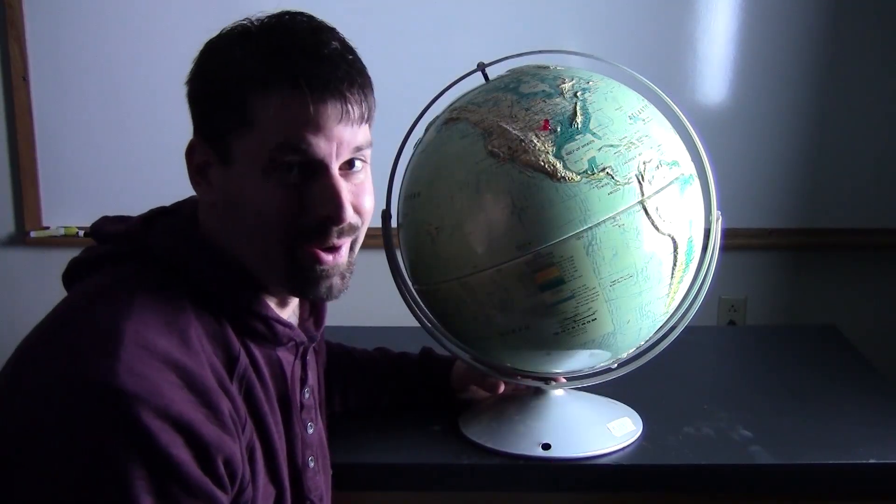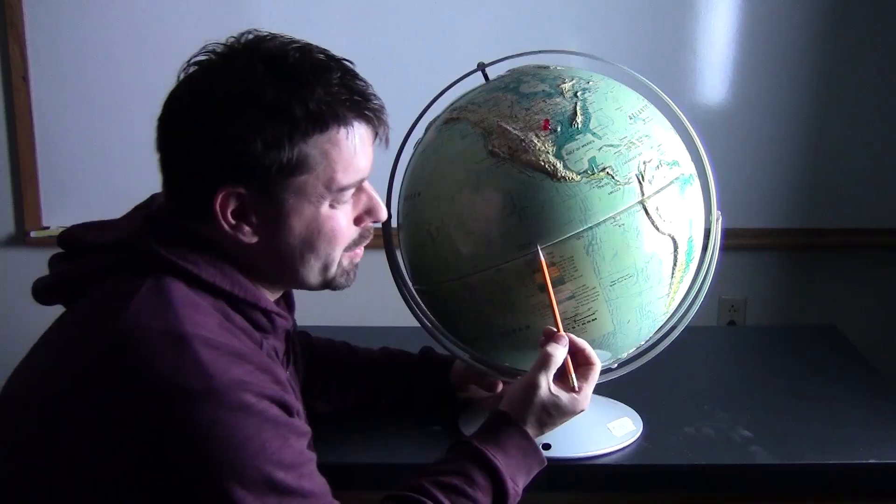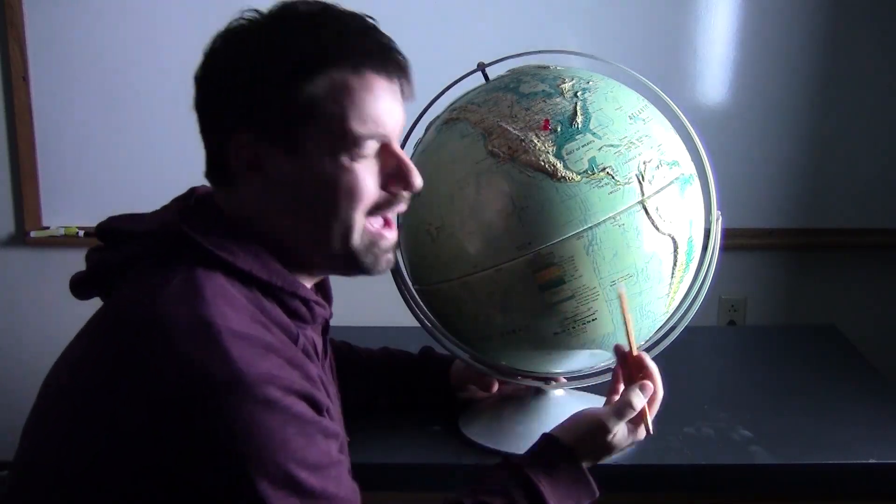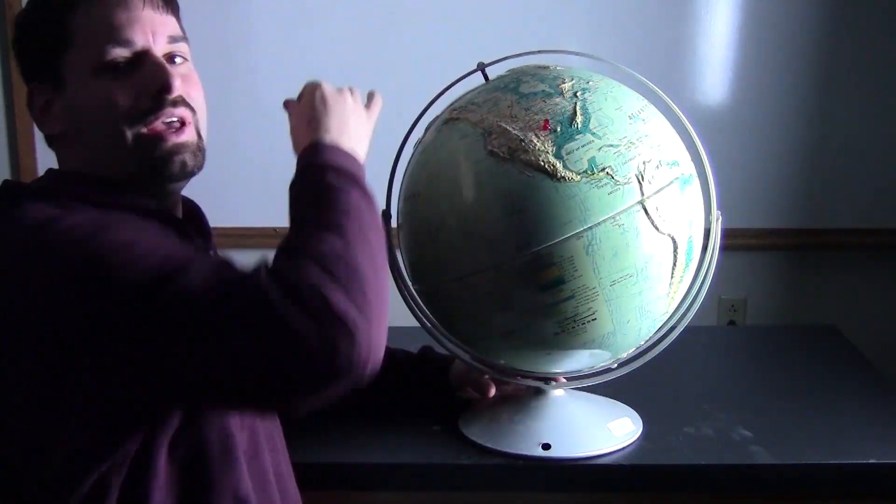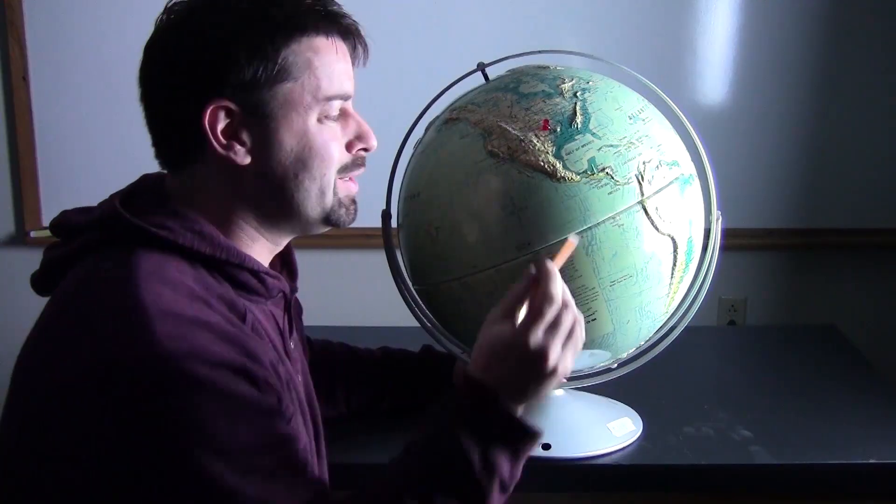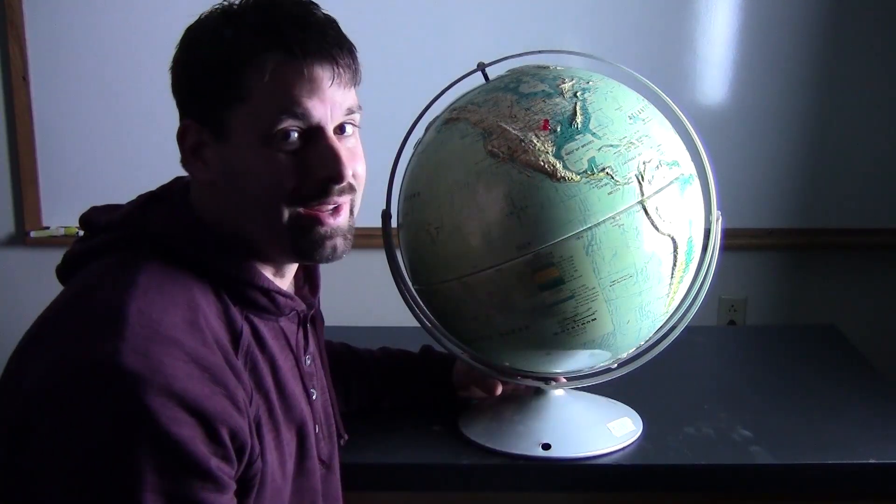And this spinning Earth is really interesting. The distance around the Earth at this center line, the equator, is about 24,000 miles, and it takes the Earth 24 hours to make one complete spin. If you do the math, that means the people at the equator are spinning about 1,000 miles per hour.